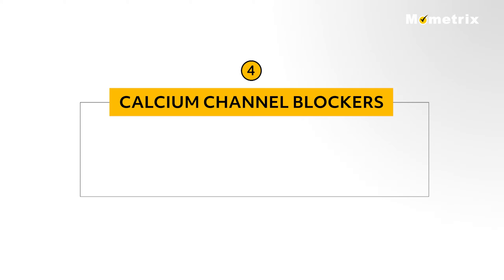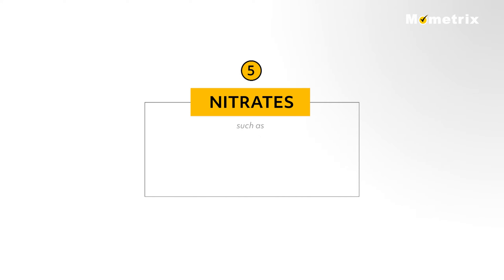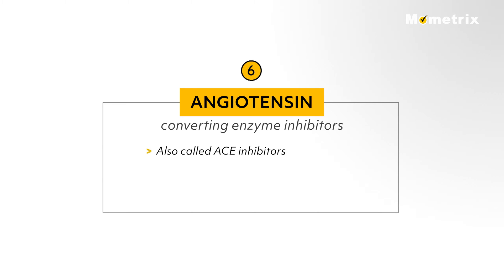Calcium channel blockers, which often but not always end with 'dipine' (D-I-P-I-N-E), like amlodipine. Nitrates like nitroglycerin or isosorbide mononitrate. Angiotensin converting enzyme inhibitors, also called ACE inhibitors. ACE inhibitors typically end with 'pril', like enalapril.